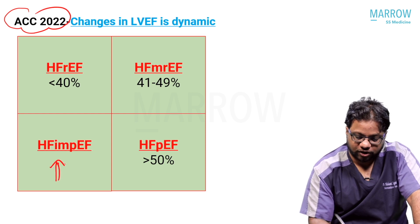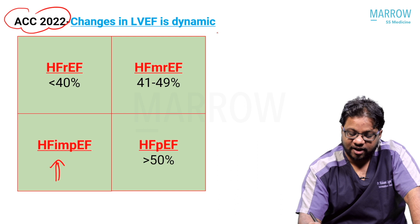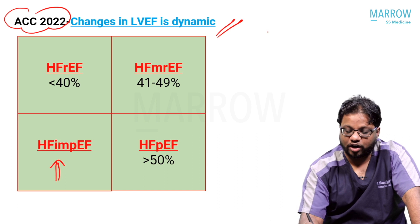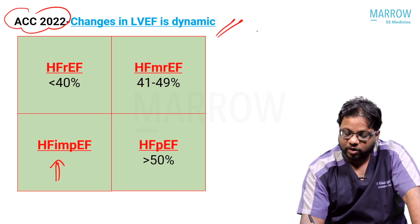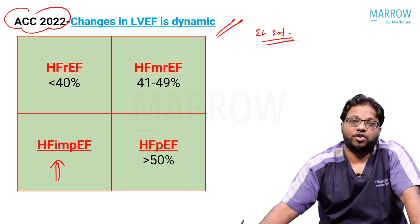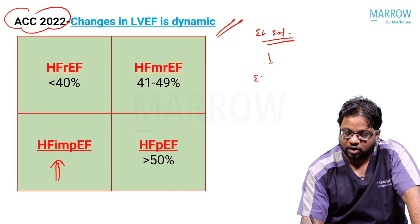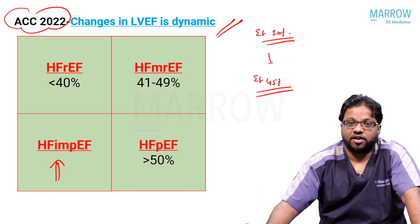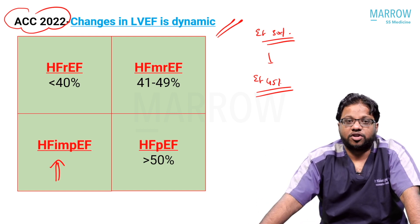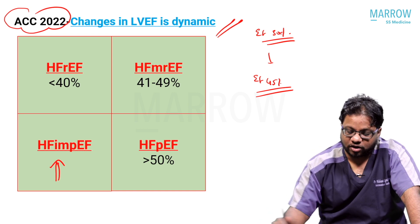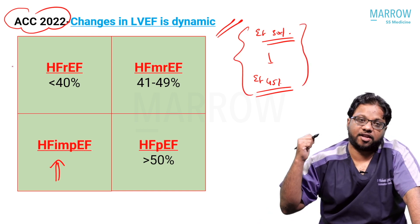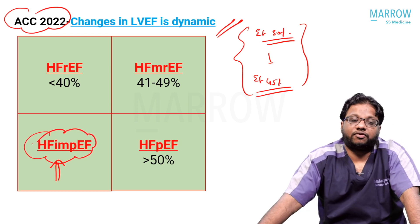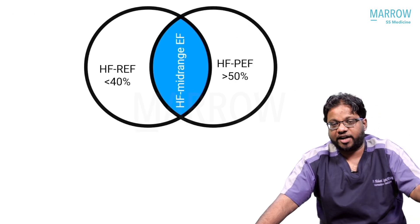The ACC 2022 adds a fourth group: heart failure with improved ejection fraction, recognizing that changes in LVEF are dynamic. For example, an ischemic cardiomyopathy patient with EF of 30% undergoes bypass surgery or angioplasty, and the EF subsequently increases to 45% — that is HFimpEF. Similarly, alcoholic cardiomyopathy with poor EF: the patient stops alcohol and EF improves. We will go with the traditional teaching of HFrEF, HFmrEF, and HFpEF.